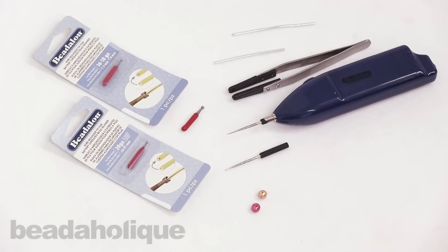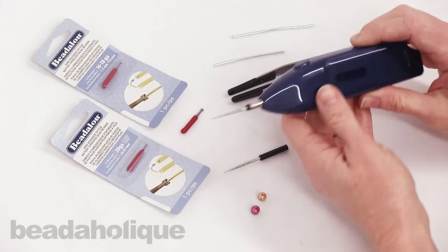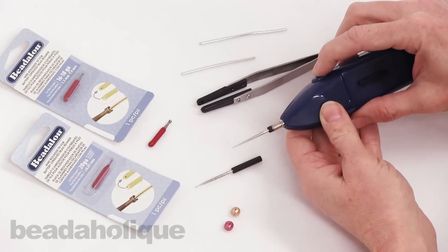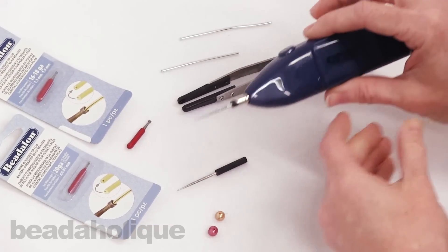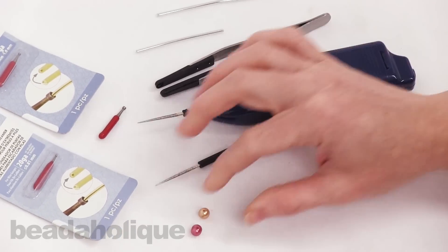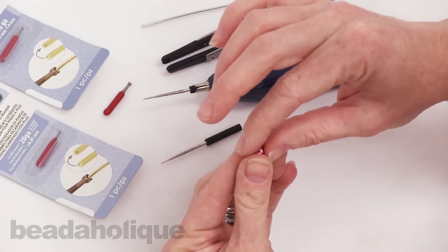Hi, this is Julie with Beadaholique, and in this video I'm going to teach you how to use Beadalon's battery operated bead reamer tool. It makes a very nice buzzing sound so you know it's working. What this tool is going to allow you to do is to expand the hole size of pearls.